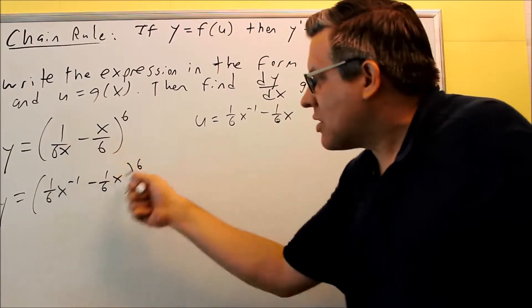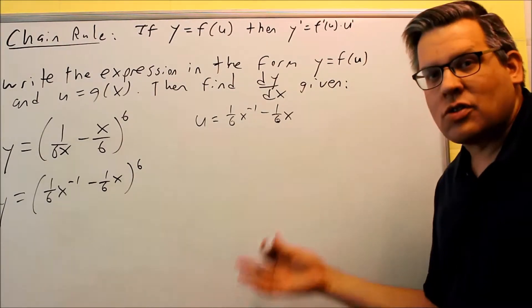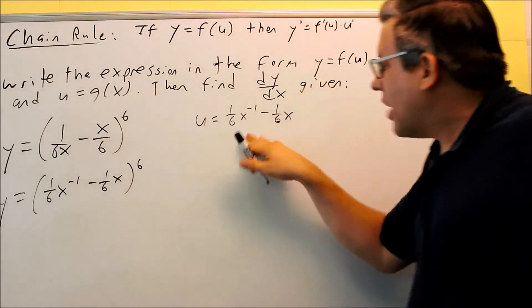The U is always going to be something that's inside parentheses. It's usually what you have, or it might be inside a square root or inside a trig function, something like that that's inside. That's your U.